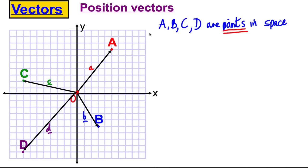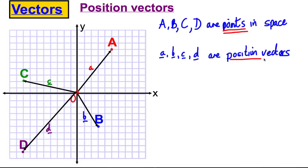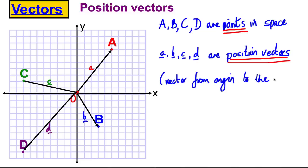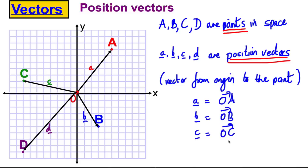Little a, little b, little c, and little d are called position vectors. By that, what I mean is they are the vector that gets you from the origin to the point. So little a is the vector from the origin to big A, little b is the vector from the origin to big B, little c is the vector from the origin to big C, and little d is the vector from the origin to big D. These position vectors tell you how to get from the origin to that point.